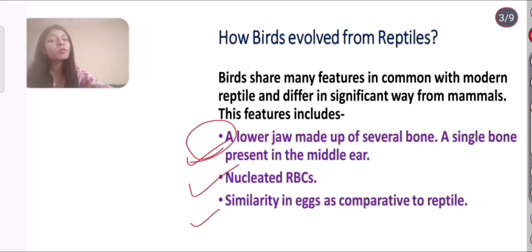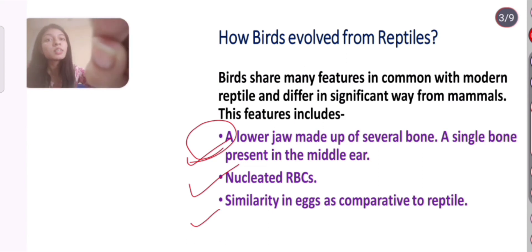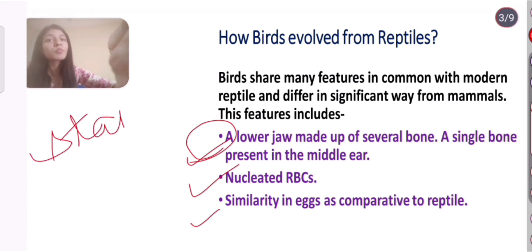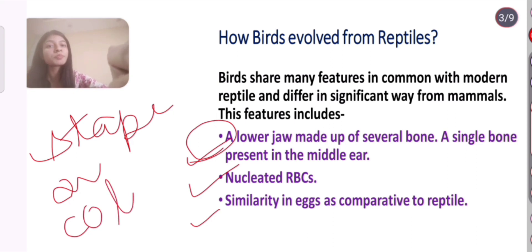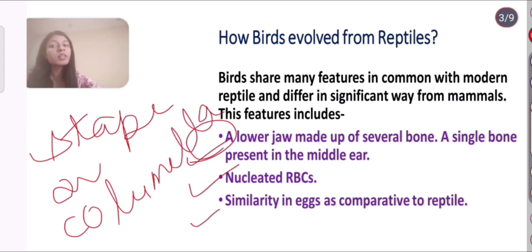To recap: first, all reptiles and birds have only one middle ear ossicle, which is the stapes or columella. Second, nucleated RBCs are present in both reptiles and birds. Third, there is similarity in eggs as compared to reptiles.